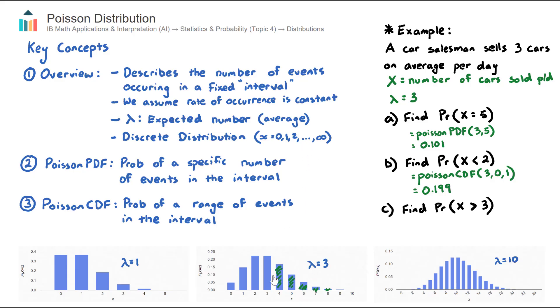That's why theoretically it can go to infinity, but when your lambda is small, any sort of score or value above, say 8, starts to get almost negligible.